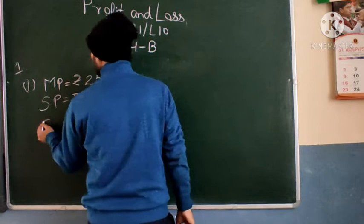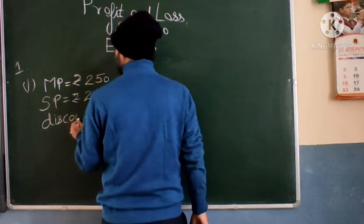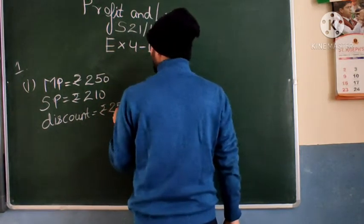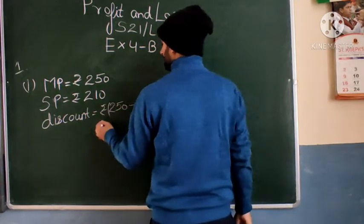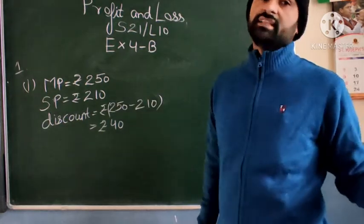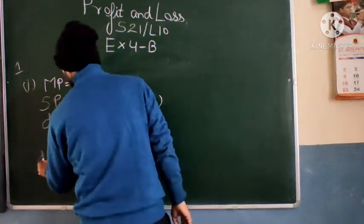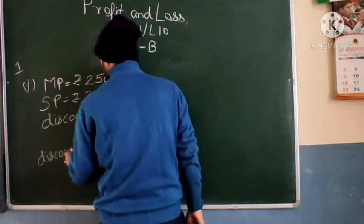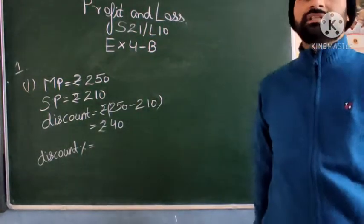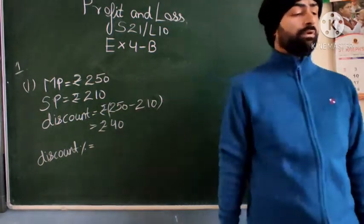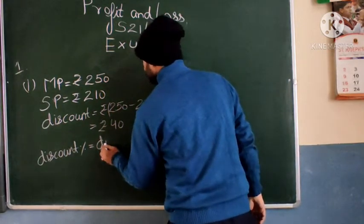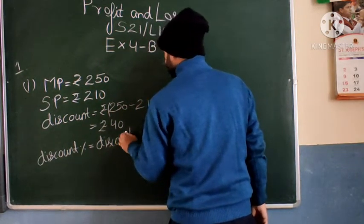So what is the discount here? Discount will be calculated as Rs. 250 minus 210, that means the discount will be Rs. 40. Now see how to calculate the percentage discount. Discount percent — it is not mandatory but I recommend that you please write the formula. Once you are in the habit of writing the formulas you will be doing it easily. So discount percentage is discount upon mark price into 100.